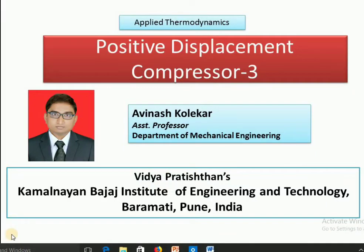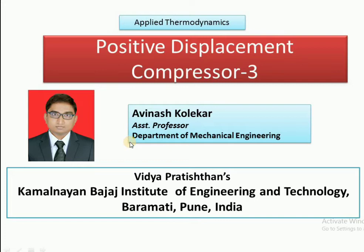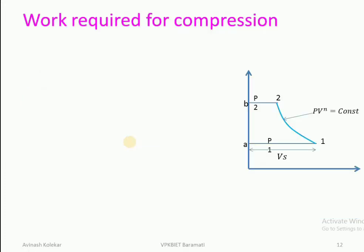Welcome to the third part of our lecture on positive displacement compressors. In the last lecture, we discussed that there are three possibilities with which the compression process will occur. Today we have to discuss the requirements for these three possibilities, or the work required for compression. That work can be calculated based on the PV diagram — the work done during one cycle equals the area enclosed by the curve on the PV diagram.